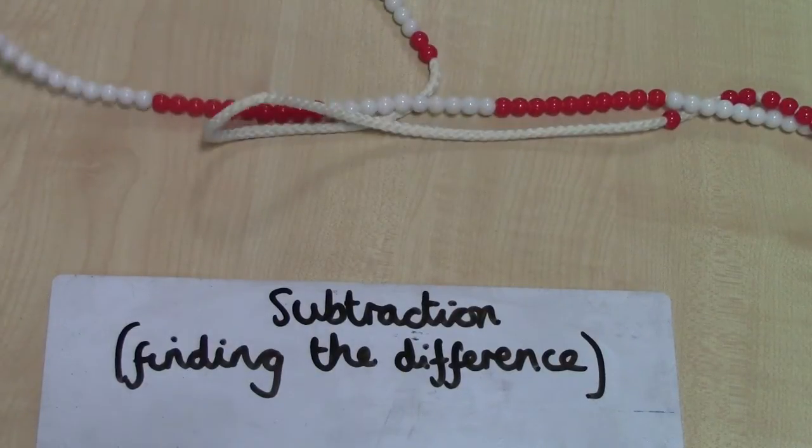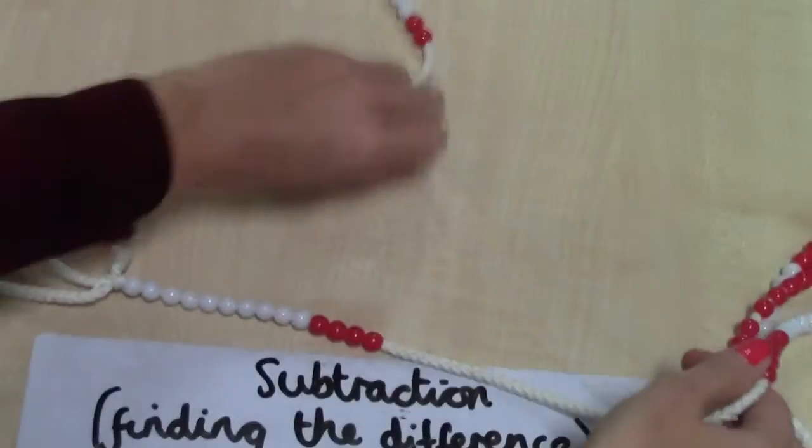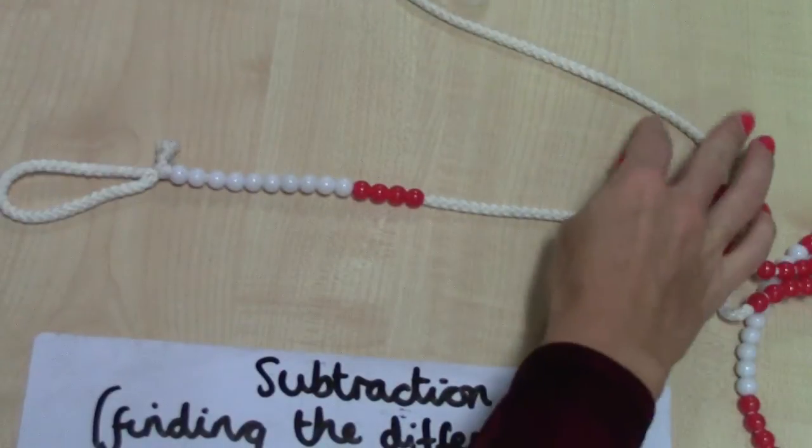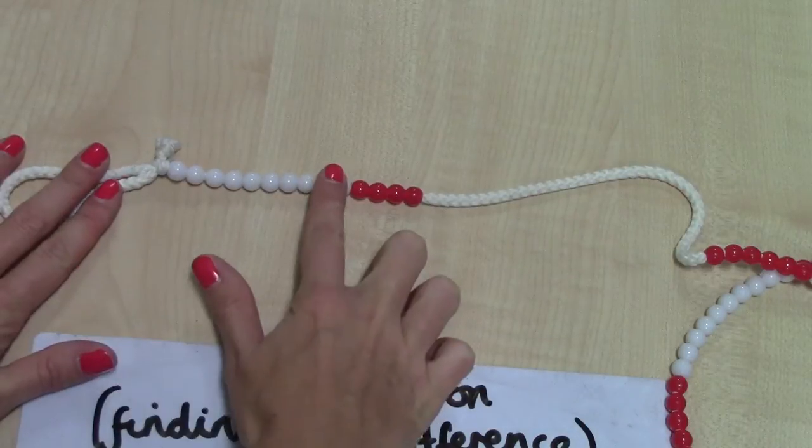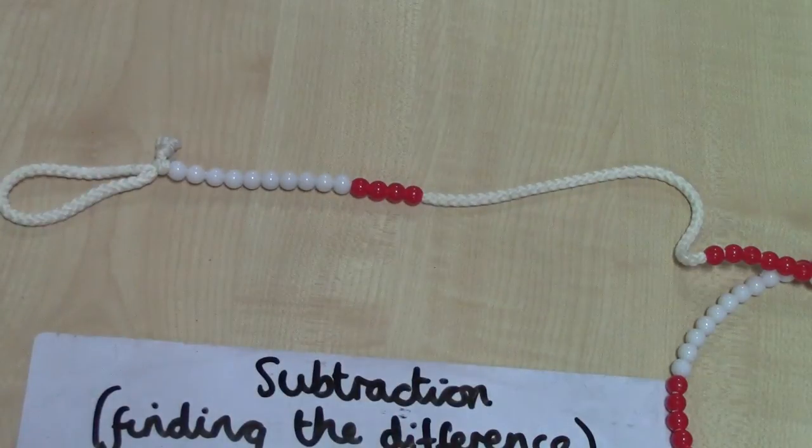On the first bead string that I've got here, I've made the number 14. I've got one set of ten and four units, I've got 14.